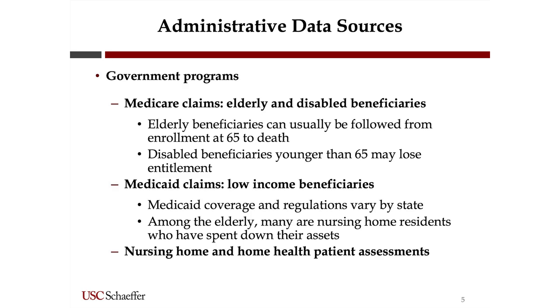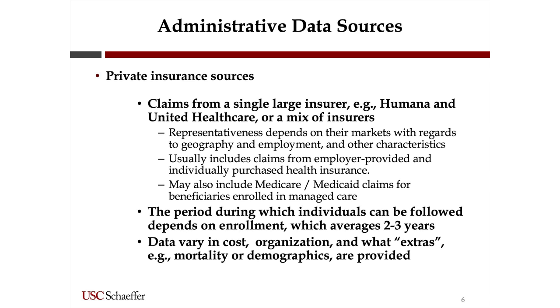We also have private insurance sources, usually claims from a single insurer. For example, you might have all of United Healthcare claims. Some claims data sets may be a mix of insurers. One thing to keep in mind with private claims is that representativeness depends on their markets — for employer-provided insurance, who are their workers and where are they geographically? You may have biases within private claims determined by what markets they're in, and that may change over time as they add and drop clients.